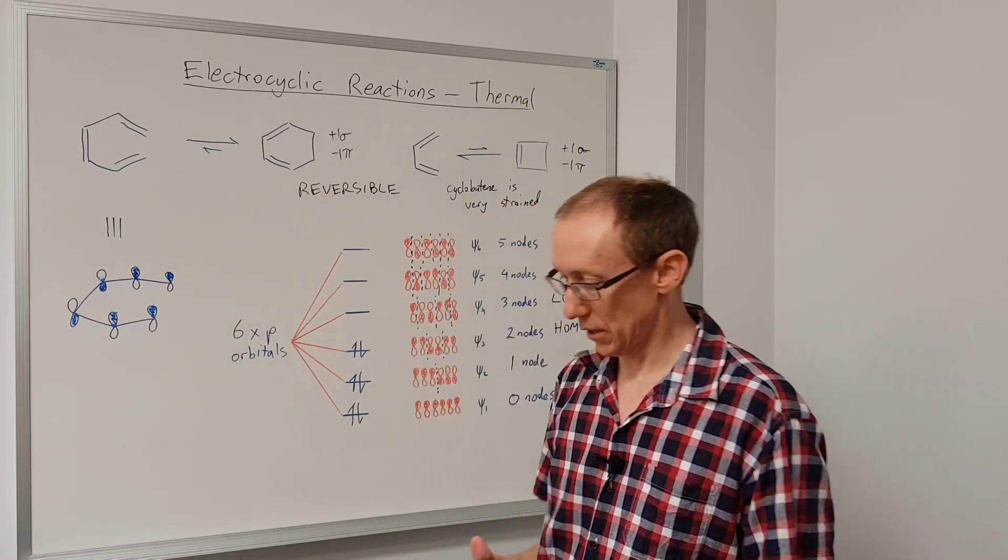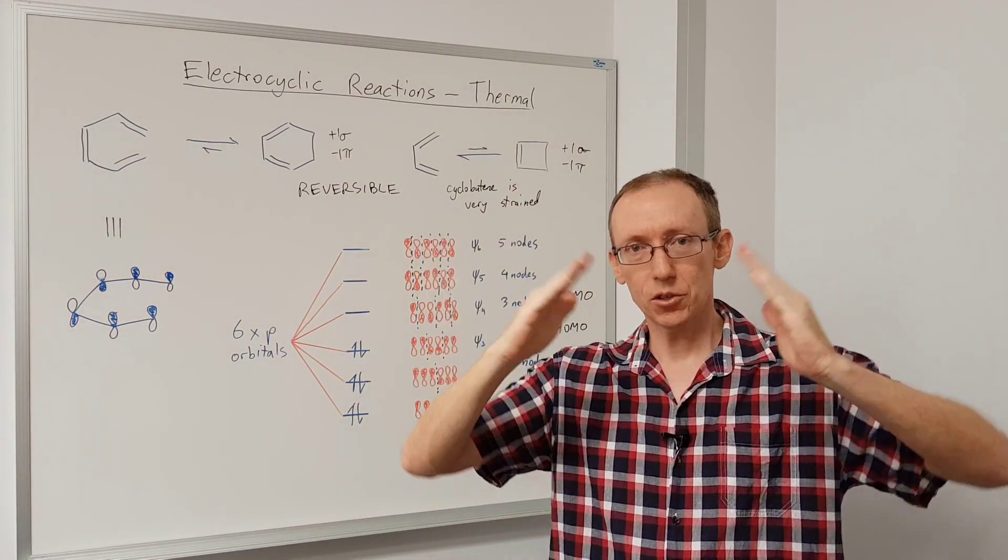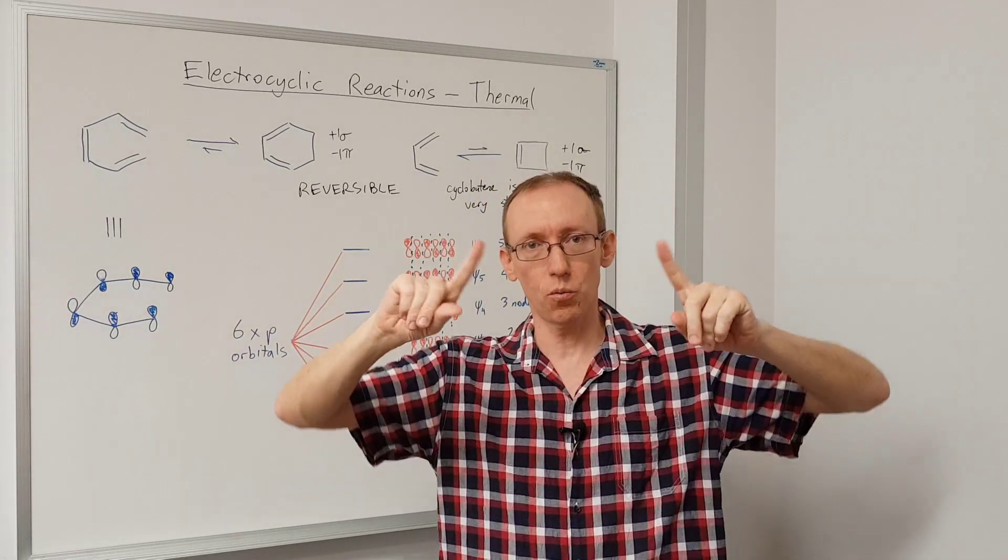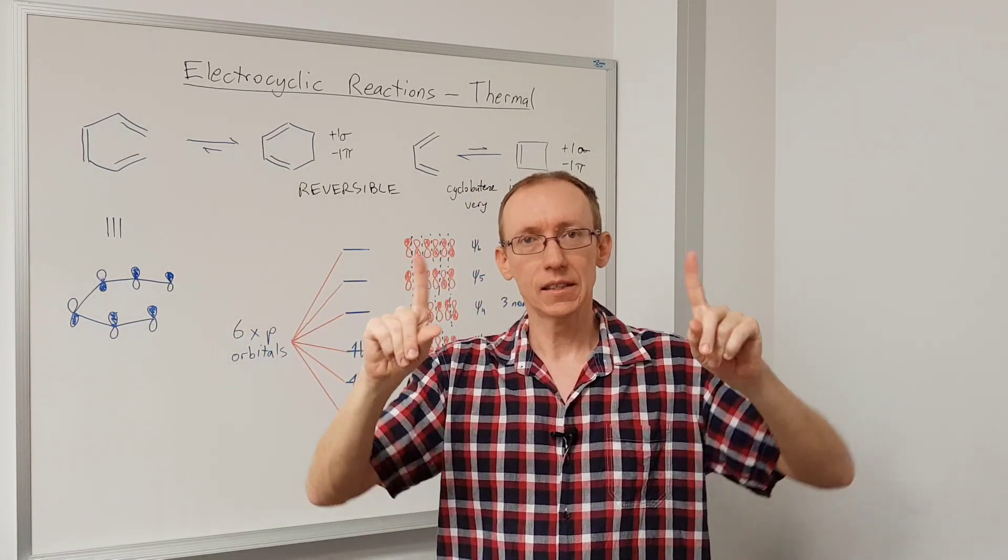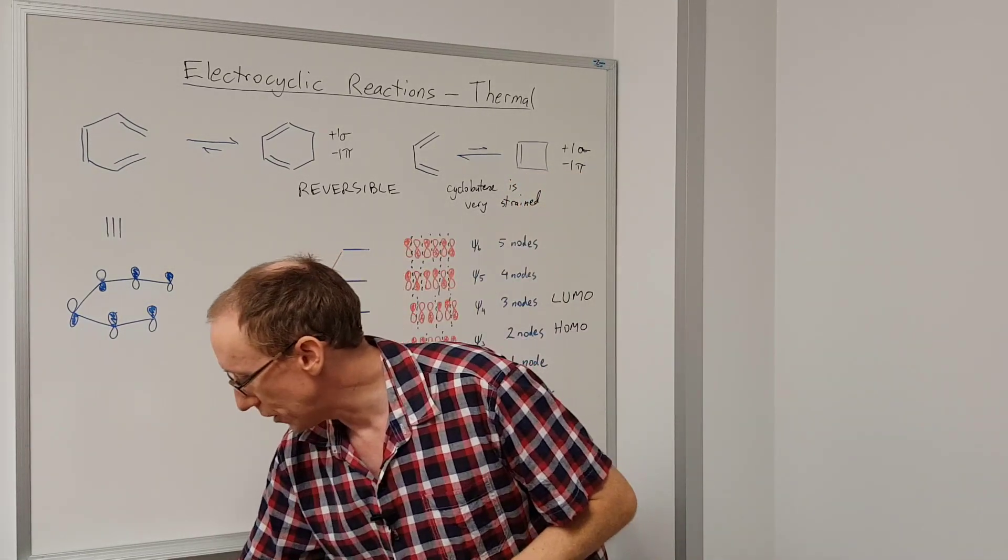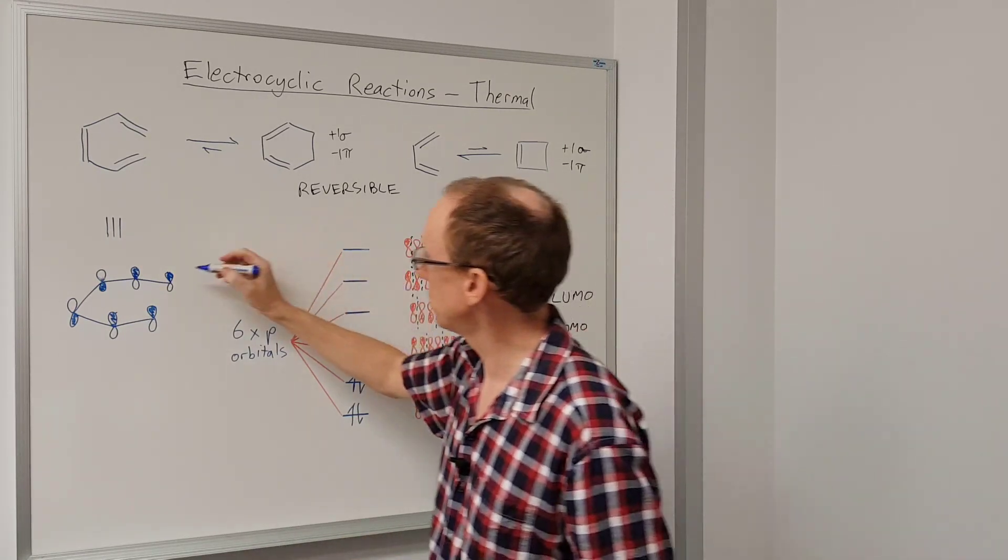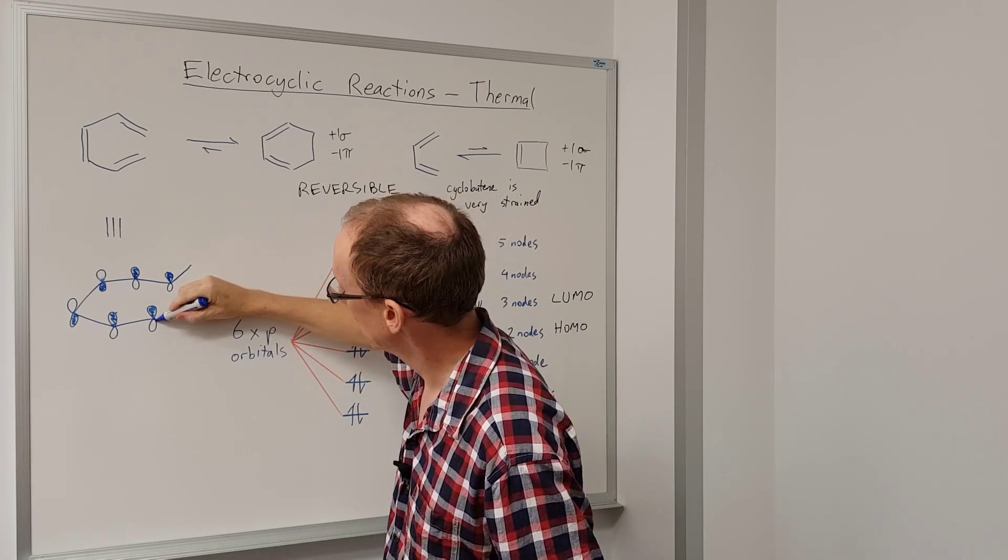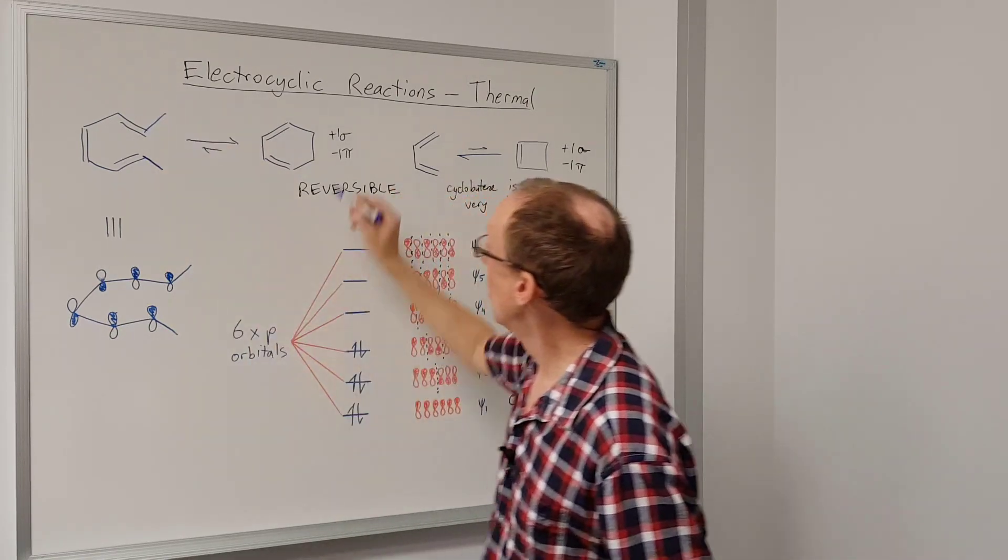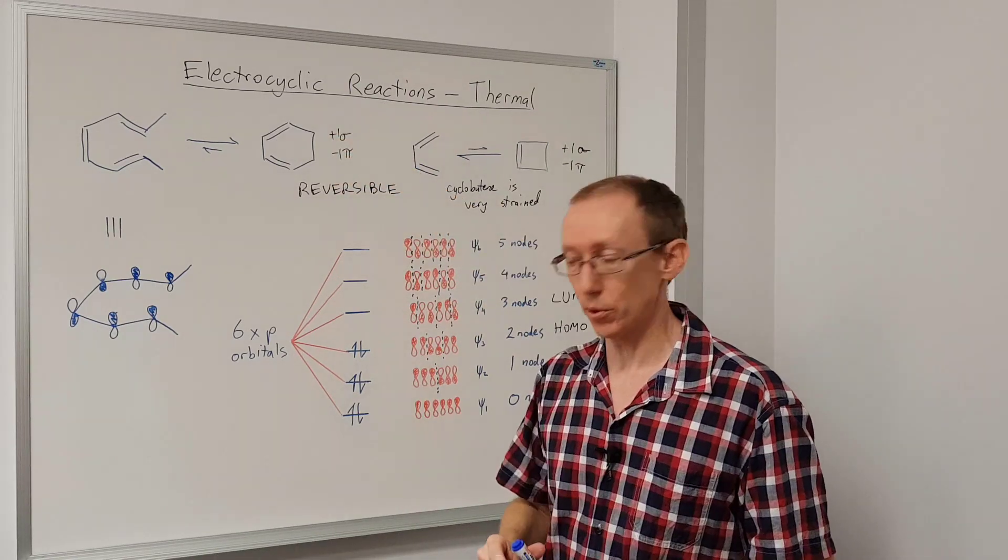Now, for this reaction to take place, we need to get those orbitals to come into constructive overlap with each other. So those two p orbitals have to go towards each other in a way that the same phases are overlapping. Now what I'm going to do is make this a little bit more interesting by having a substituent on each one of these carbon atoms. So if we have substituents there, substituents there, how will the methyls be arranged on the product?